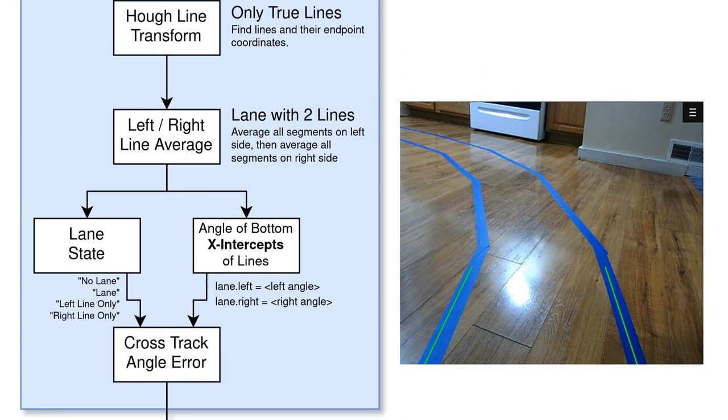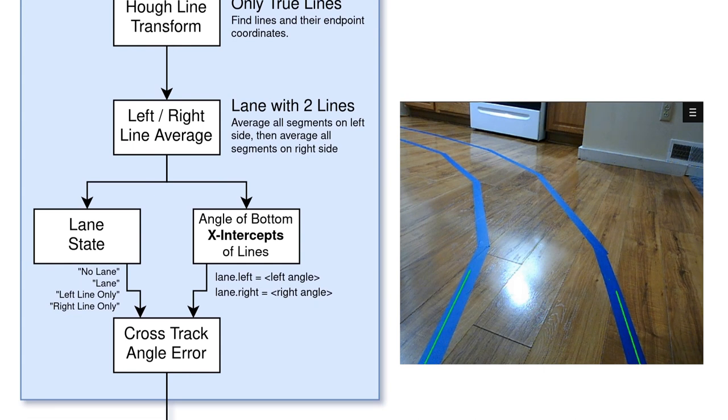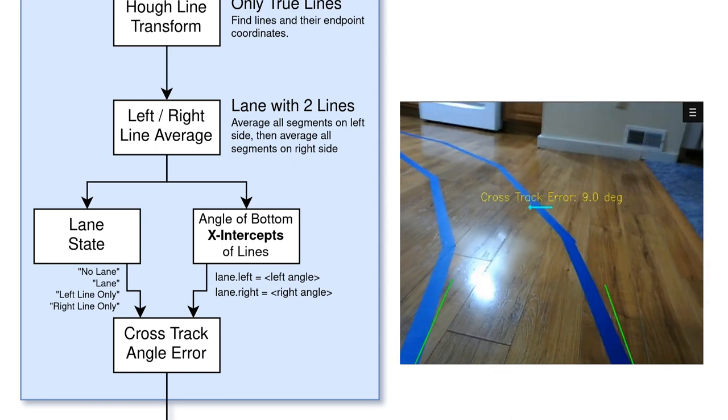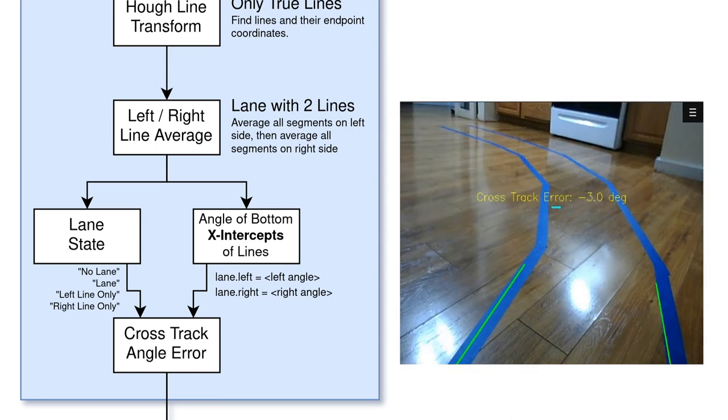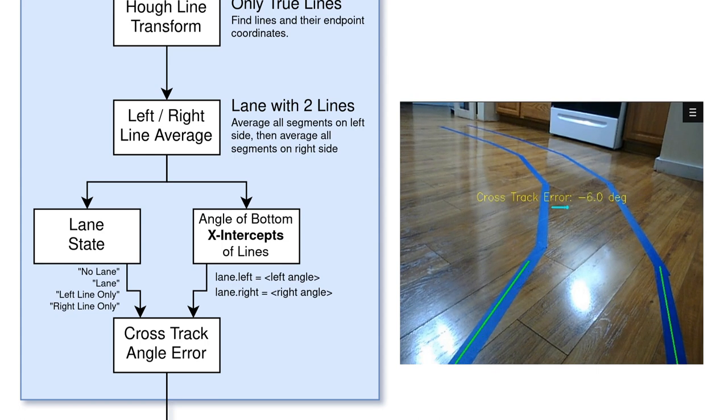When two lines are detected, the error between the vehicle's trajectory and the lane we currently define as the difference between the angle of the bottom y-intercept of the left and right lanes from the center of the frame. In our case, a positive error means the vehicle needs to steer left, and a negative error means the vehicle needs to steer right. If one or no lines are detected, we use a state machine which estimates the error accordingly.